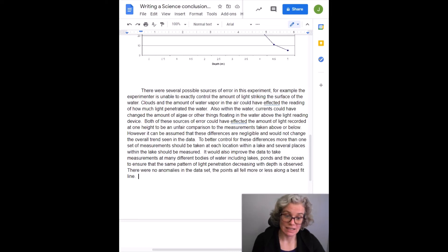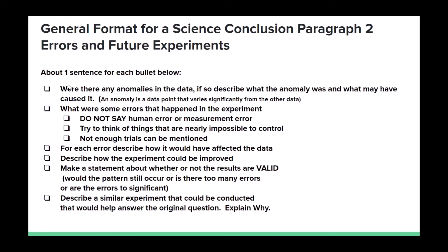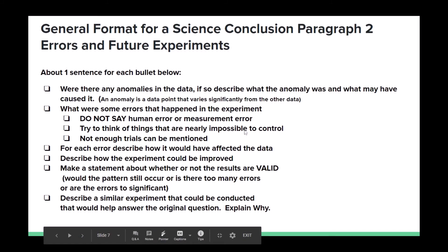There were no anomalies in the data set. The points all fell more or less along a best fit line. So far now we've discussed the anomalies in the data, we've talked about errors, we've talked about how the error would have affected the data, and we've also - we didn't directly say it, but we did discuss how the experiment could be improved.